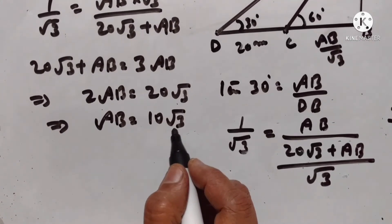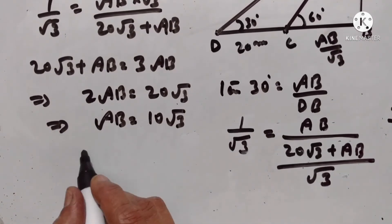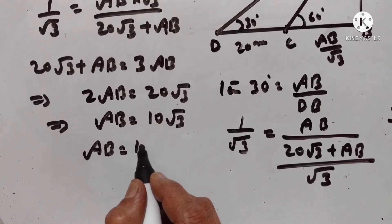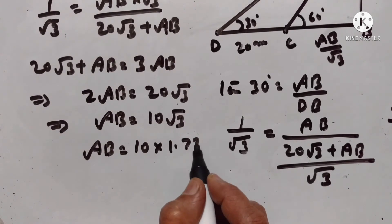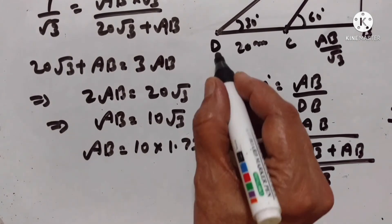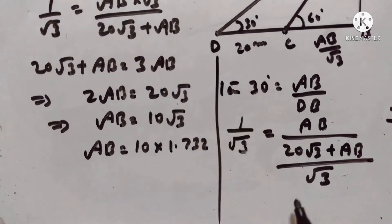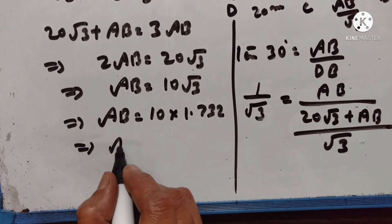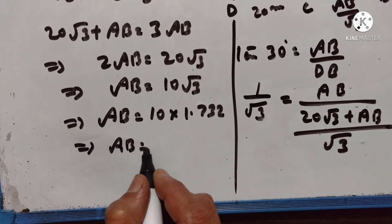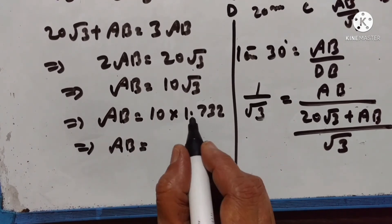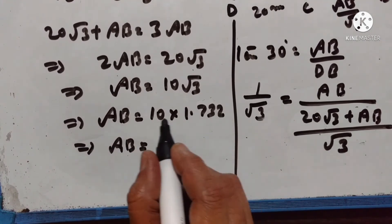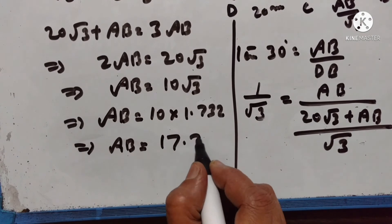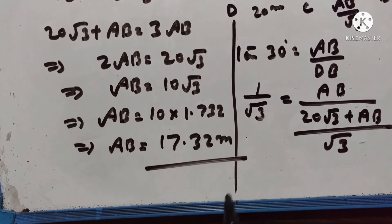Square root of 3 is equal to 1.732. So AB is equal to 10 into 1.732. Therefore the height of the tree AB is equal to 17.32 meters.